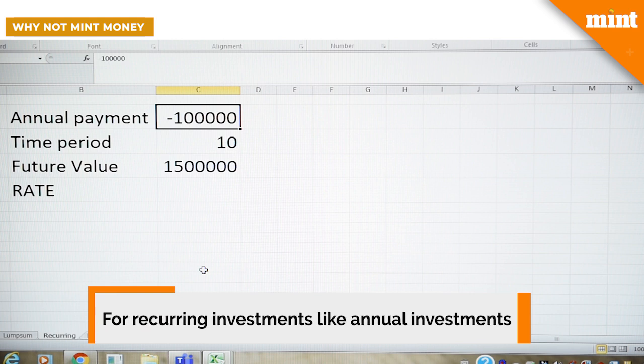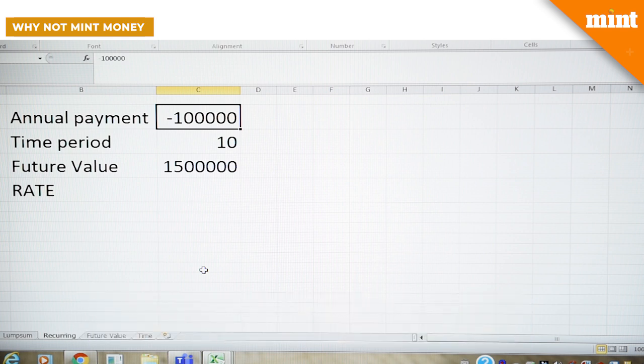Your annual payment in this case is about 1 lakh. Please understand that I have put a negative sign here to indicate a cash outflow. Time period is 10 years, future value is about 15 lakh. What do we do?